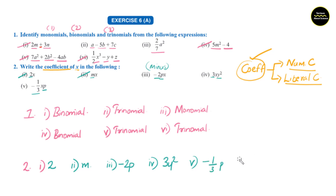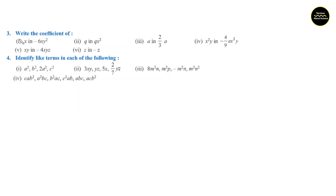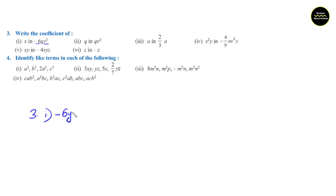That is the end of section number 2. Section number 3: write the coefficient of the following expression. In each of the following expressions we need to find the coefficient again. Here also it is simply asked for 'coefficient,' so we should include both numerical and literal coefficient. Question number 1: x in minus 6xy square. We can exclude x and whatever counts — that is minus 6 and y square. The answer is minus 6y square.